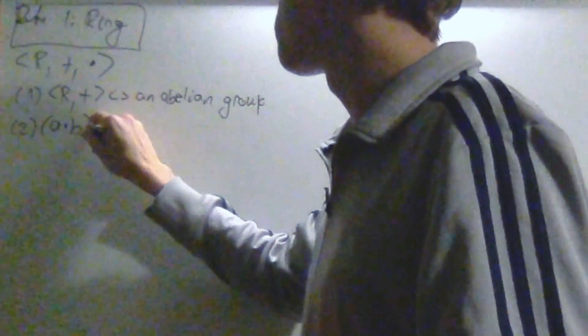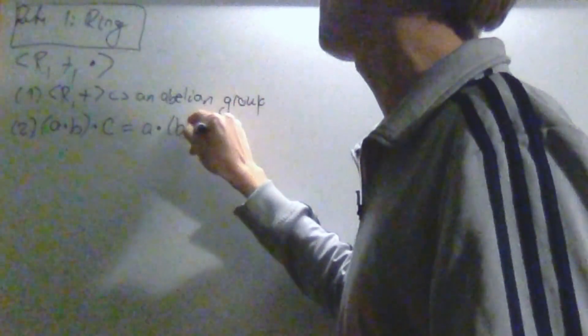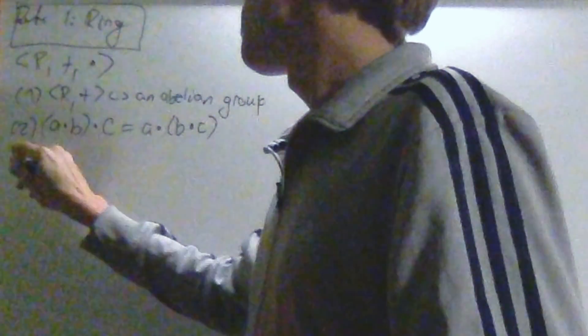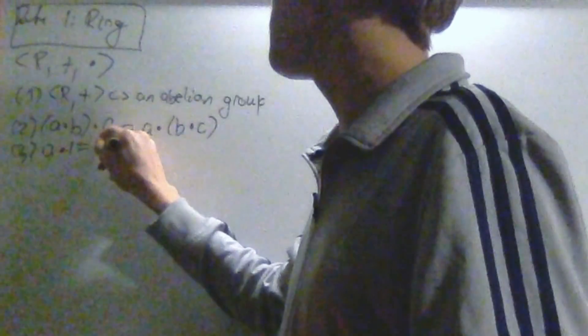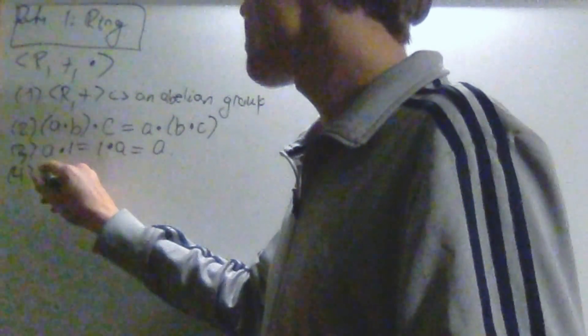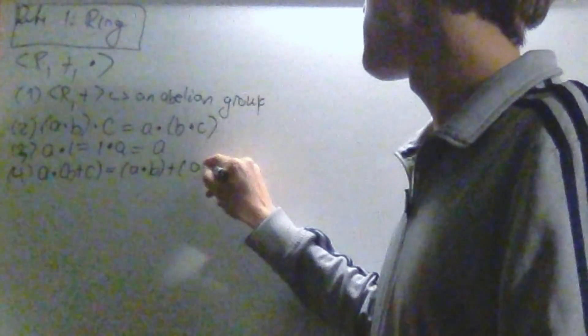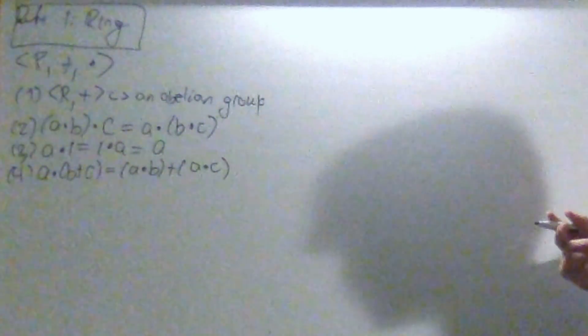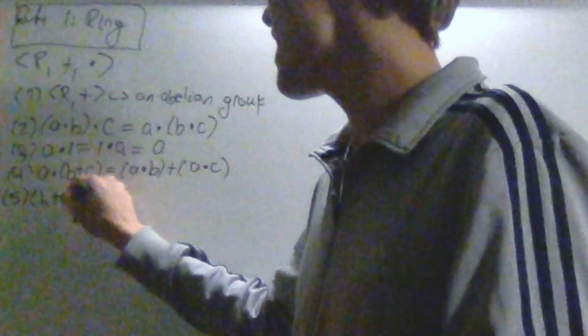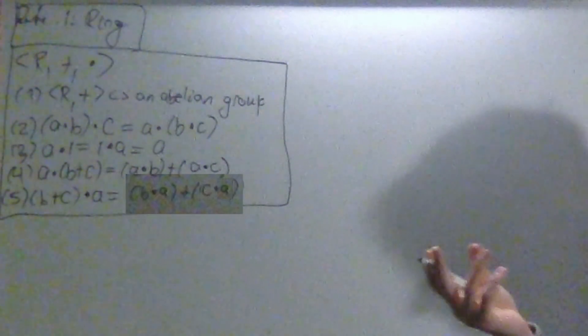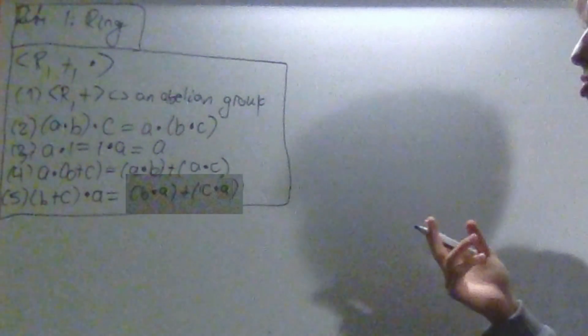That it has the associative property. This is just one that you want to have for any operation. And that it also has, number 3, that a times 1 is equal to 1 times a is equal to a for all a. That's the other property. And then number 4 is that we have a times b plus c is equal to a times b plus a times c. And notice how I never said that multiplication has to be commutative or abelian. And so we actually have to add in another term for the right-hand distributive law. That's it. That's the definition of a ring.